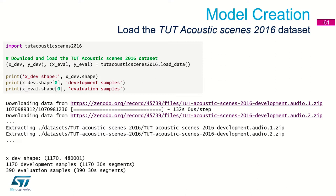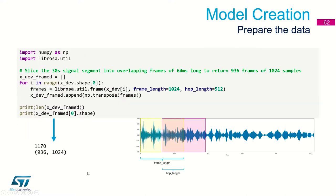As the first step to build the learning dataset, we are downloading the raw audio dataset from a public location using Python code. As the result of this download process, we have 1,170 30-second-long segments as development samples and 390 30-second-long segments as evaluation samples — a lot of data.